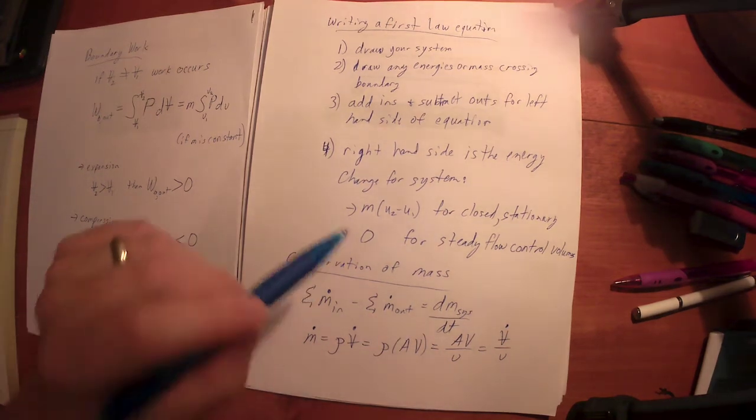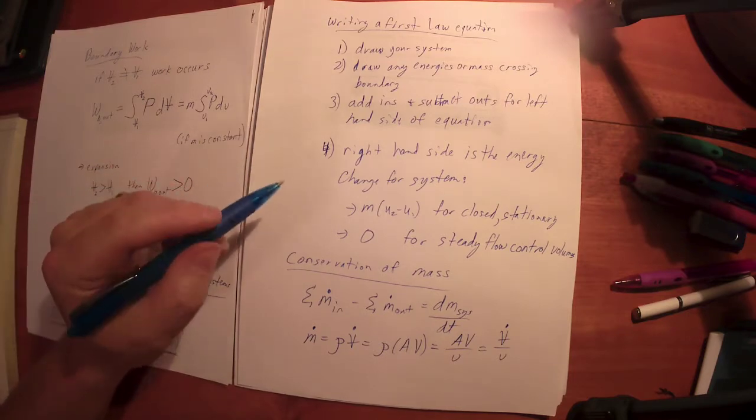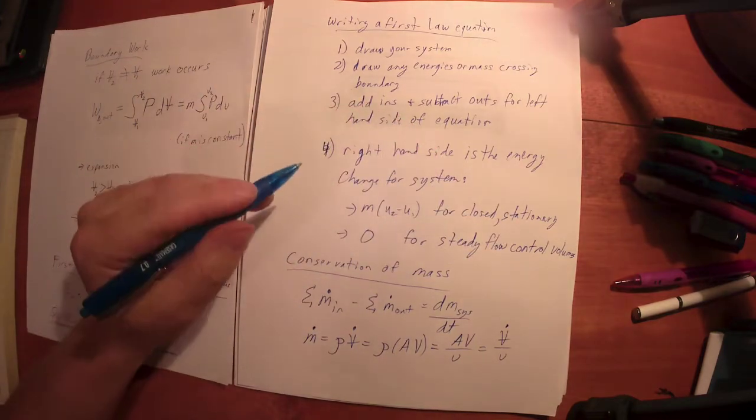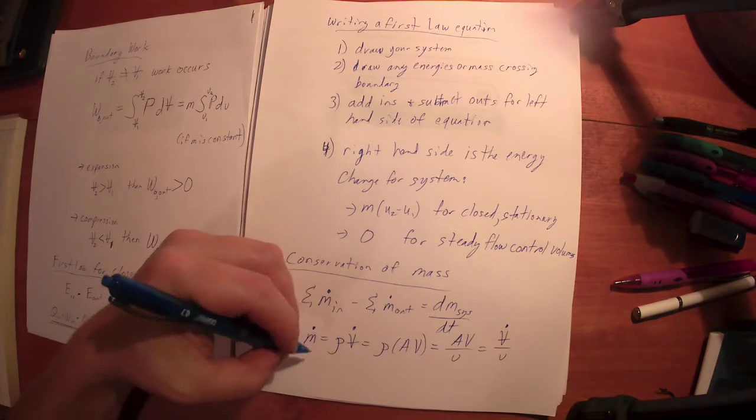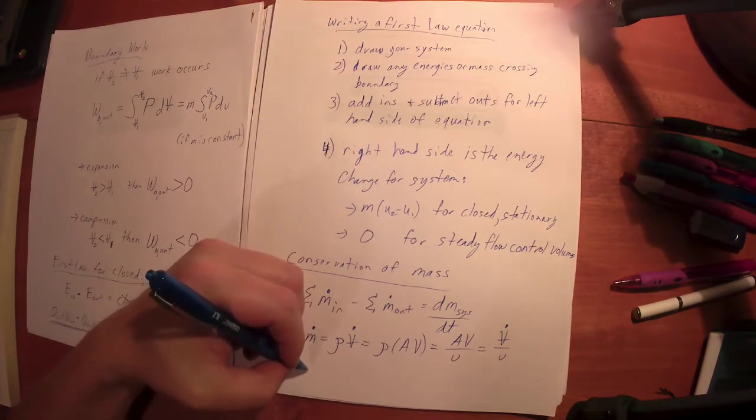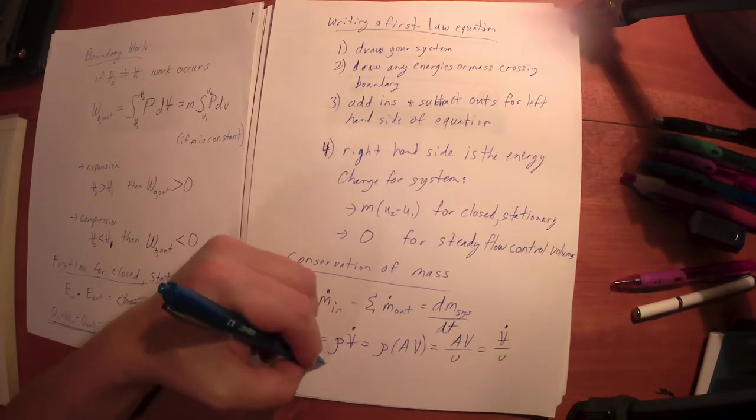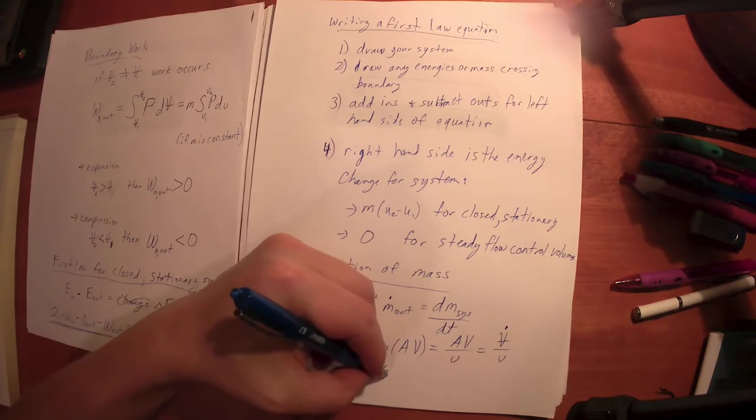So we're talking about finding mass flow rate and conservation of mass. Now as I've alluded to up here, if I've got a steady flow control volume - I'm not going to go into definition, we've talked about that multiple times, find it in another video or look it up or ask me, send me an email if you're not sure.